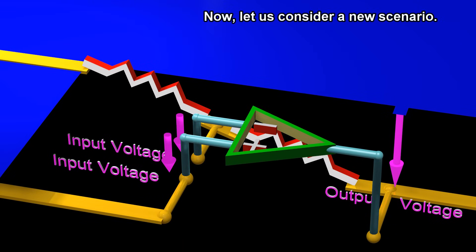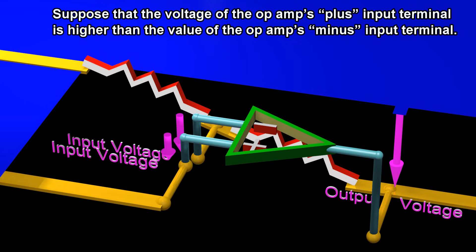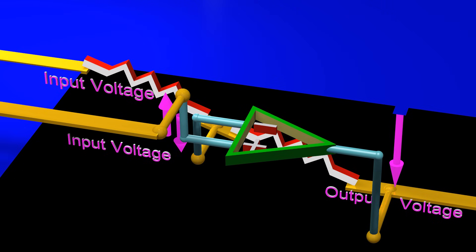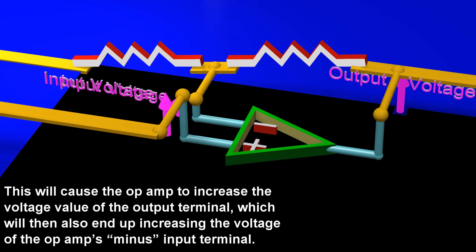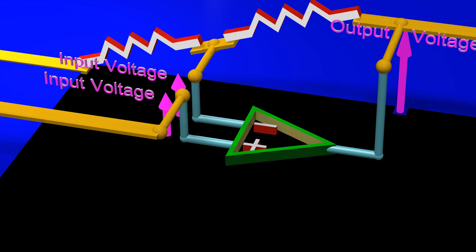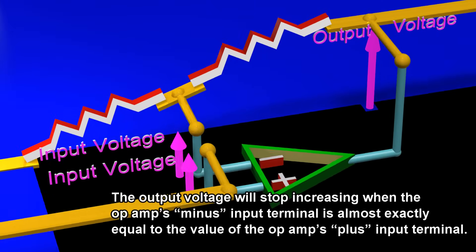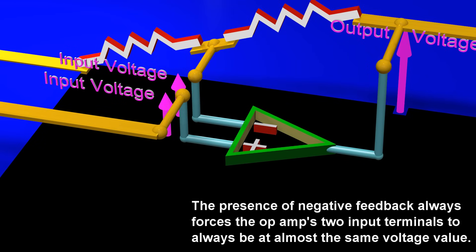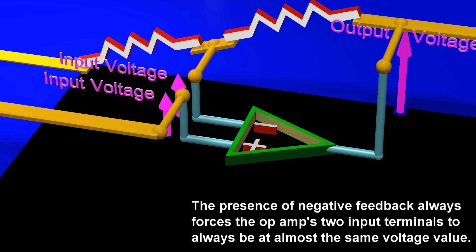Now, let us consider a new scenario. Suppose that the voltage of the op-amp's plus input terminal is higher than the value of the op-amp's minus input terminal. This will cause the op-amp to increase the voltage value of the output terminal, which will then also end up increasing the voltage of the op-amp's minus input terminal. The output voltage will stop increasing when the op-amp's minus input terminal is almost exactly equal to the value of the op-amp's plus input terminal. Therefore, the presence of negative feedback always forces the op-amp's two input terminals to always be at almost the same voltage value.